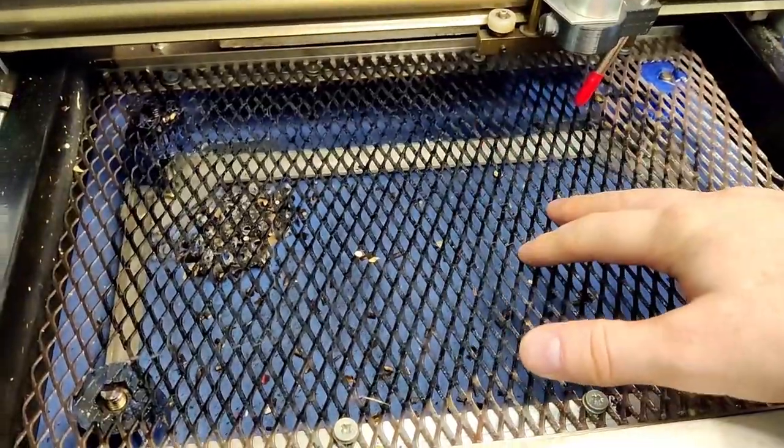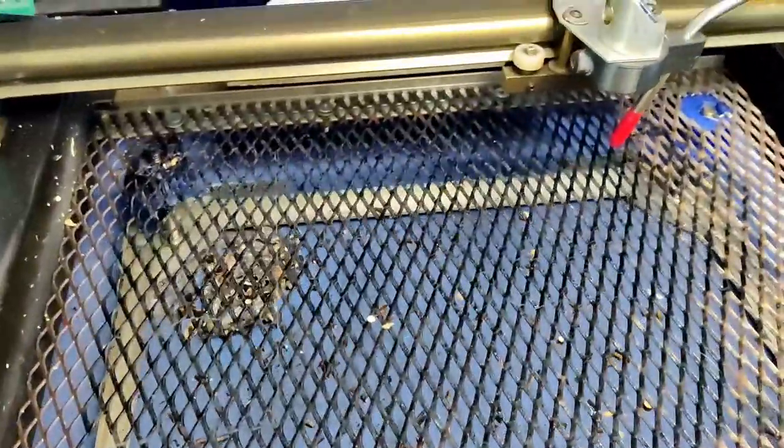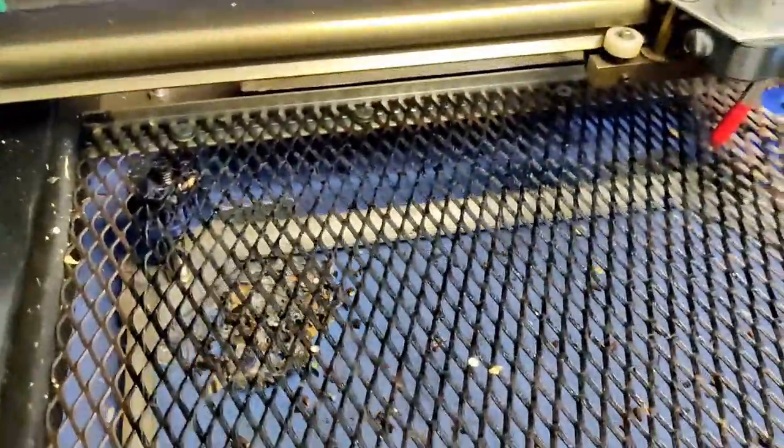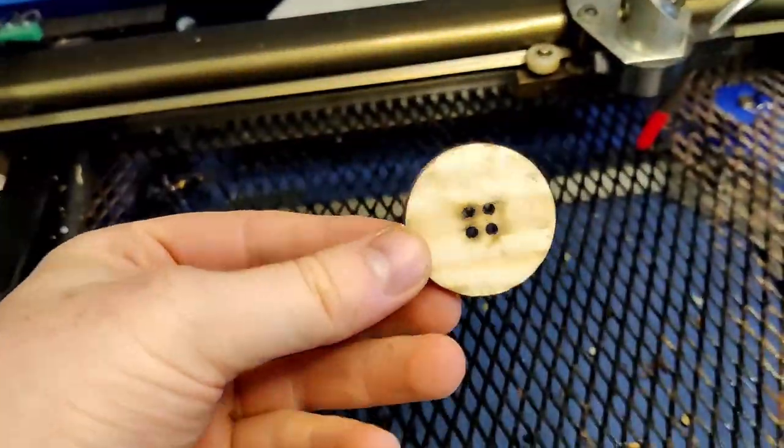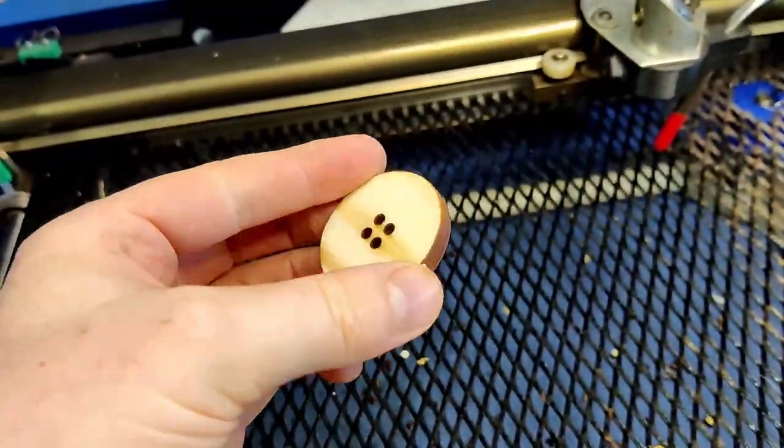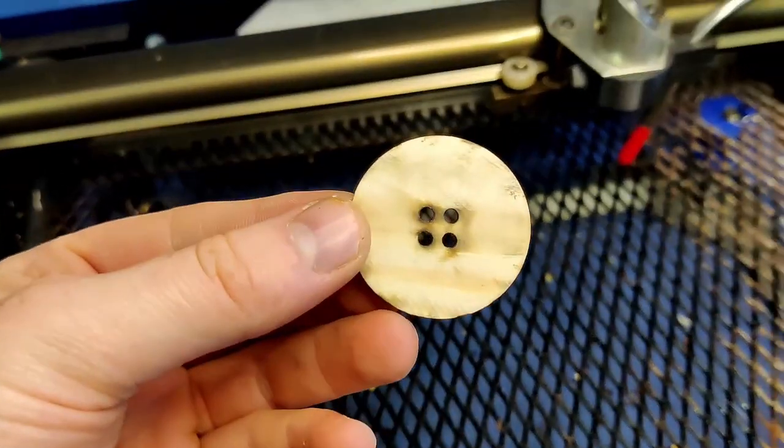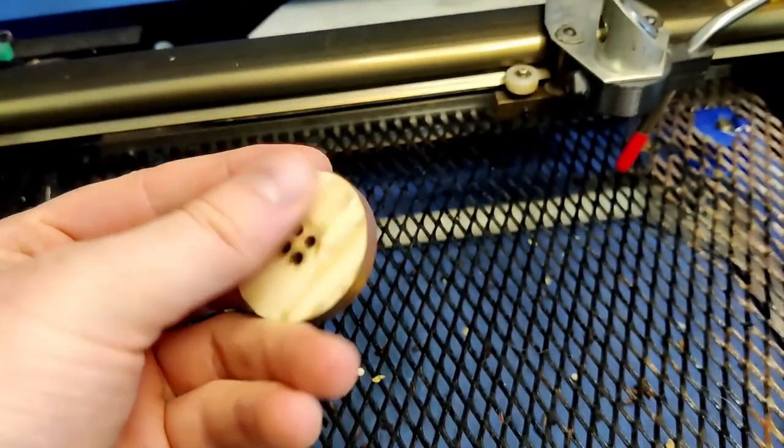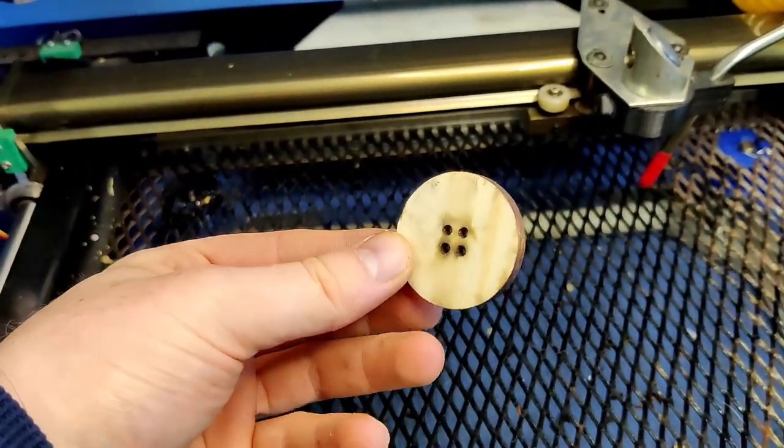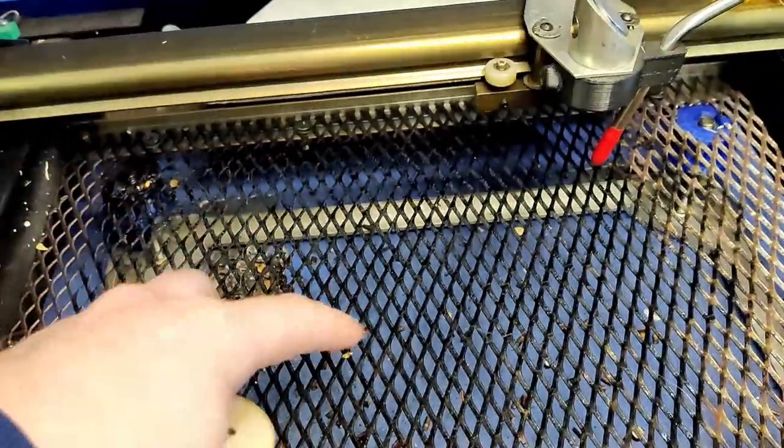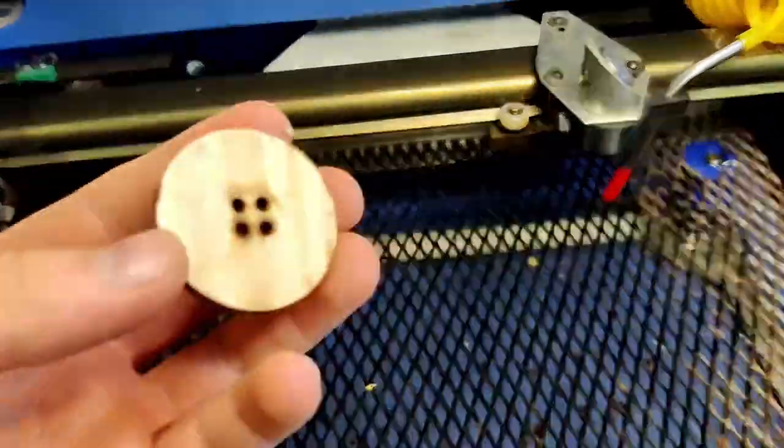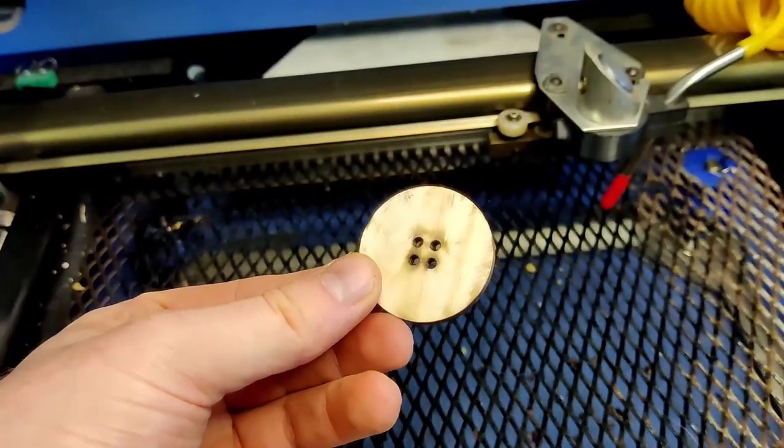The introduction of the mesh bed has really helped with the reduction in burn marks. If I get an example here you can see on the bottom of this button that I've cut, there's scorching and ash marks and even that's not ideal, but without having this mesh bed if this was just a solid piece of aluminium that would be 10 times worse.